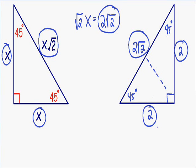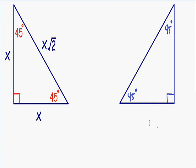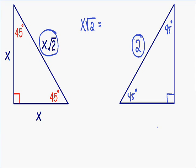This was an easier example, so let's go over a more difficult one. This example is harder because I'm going to give you the length of the longer side instead of the shorter side. Let's say that the length of the hypotenuse is equal to 2. Our hypotenuse equals x multiplied by the square root of 2, so x times the square root of 2 equals 2. We don't know x yet, but we know x times the square root of 2.